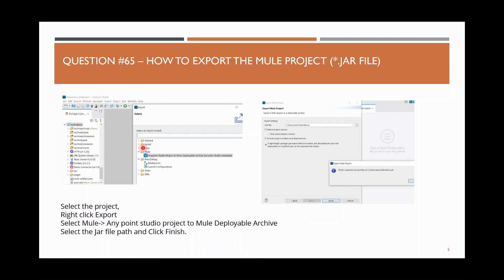We need to choose this option because the deployable archive is nothing but the JAR file. We are going to export this project as a deployable build — a JAR file.